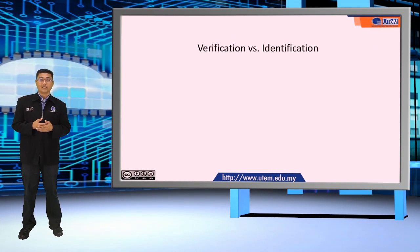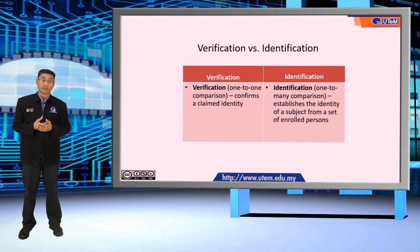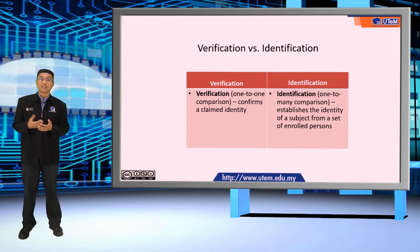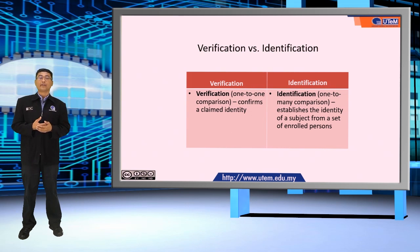Verification versus identification. Verification is a one-to-one comparison to confirm a claimed identity, and identification is a one-to-many comparison which establishes the identity of a subject from a set of enrolled persons.